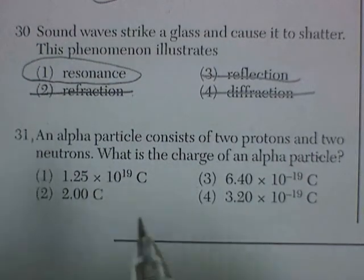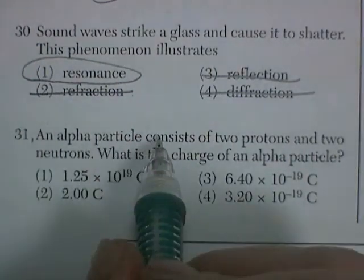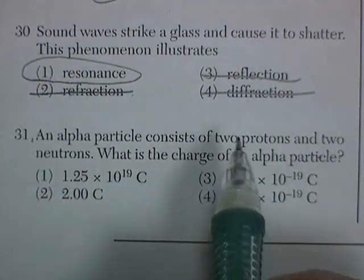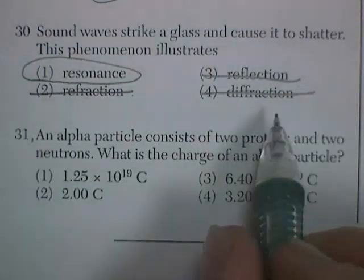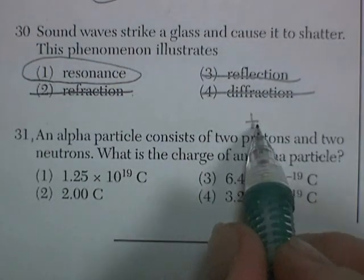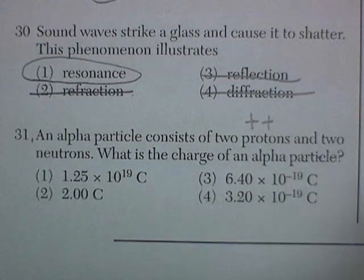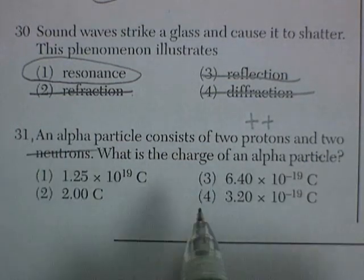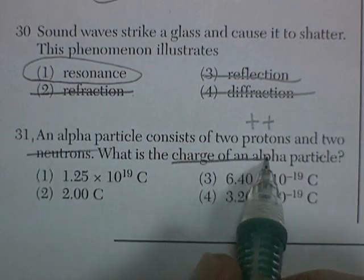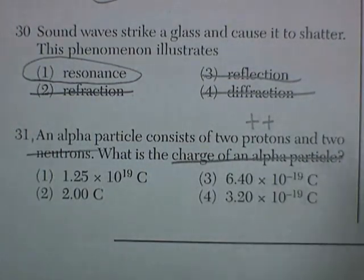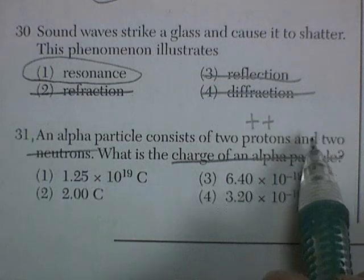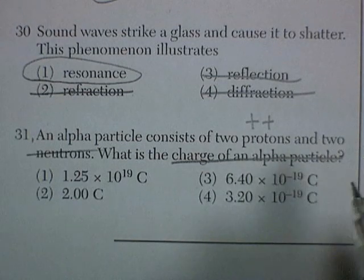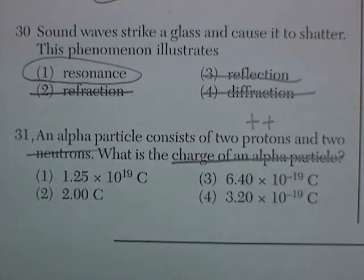Question 31. An alpha particle consists of two protons — two pluses — and two neutrons, two nothings. What's the charge of the alpha? It would be positive 2, but they want it in coulombs.